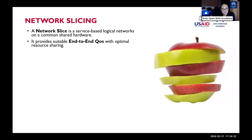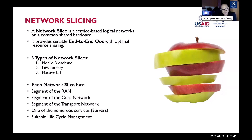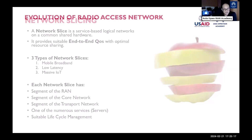There are typically three network slices corresponding to the three use cases: mobile broadband, low latency, and massive IoT — and these can be customized by the mobile network operator. Each network slice has a segment of the RAN (divided by low, mid, or high frequency), its own core network segment with orchestration and management, different QoS, and suitable lifecycle management.